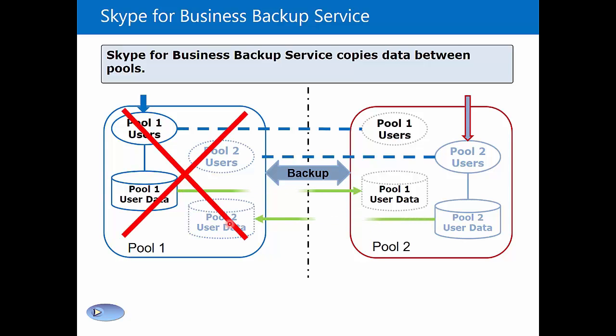Now in the event of a failure, Pool 1 goes offline. In this instance, as the users that are homed on Pool 1 try to sign in, they will not be able to successfully sign in, and they will get directed over to their backup registrar, which happens to be Pool 2. They will be able to sign in, but they will be in reduced functionality mode.